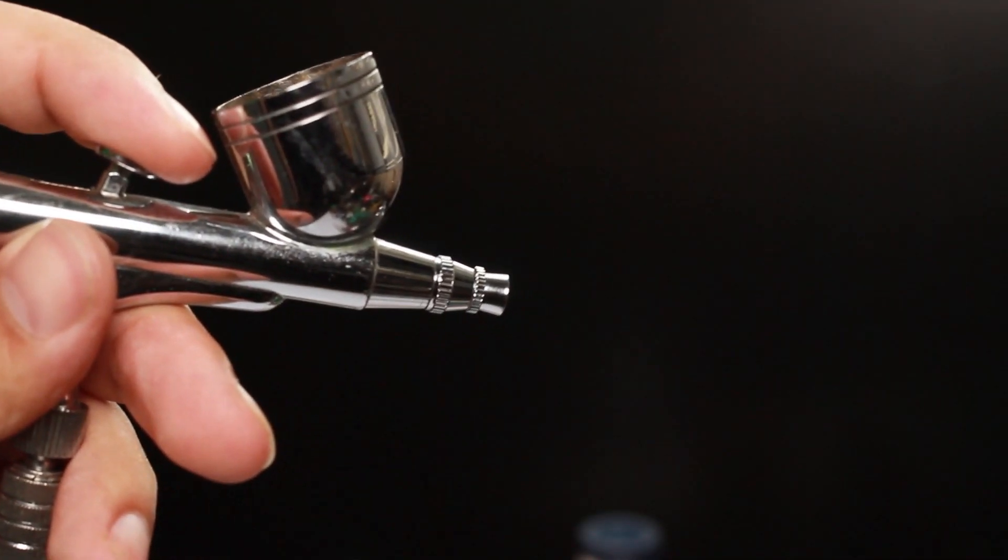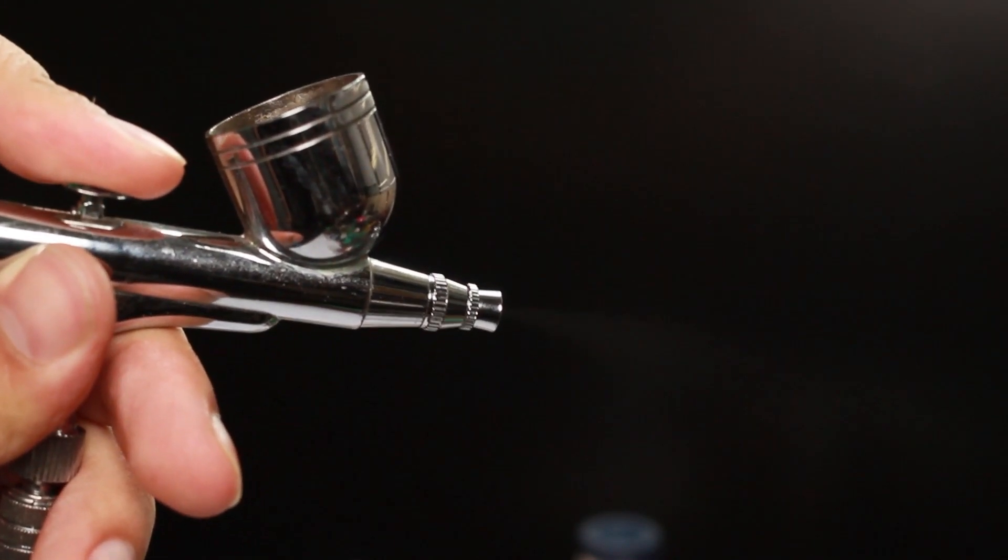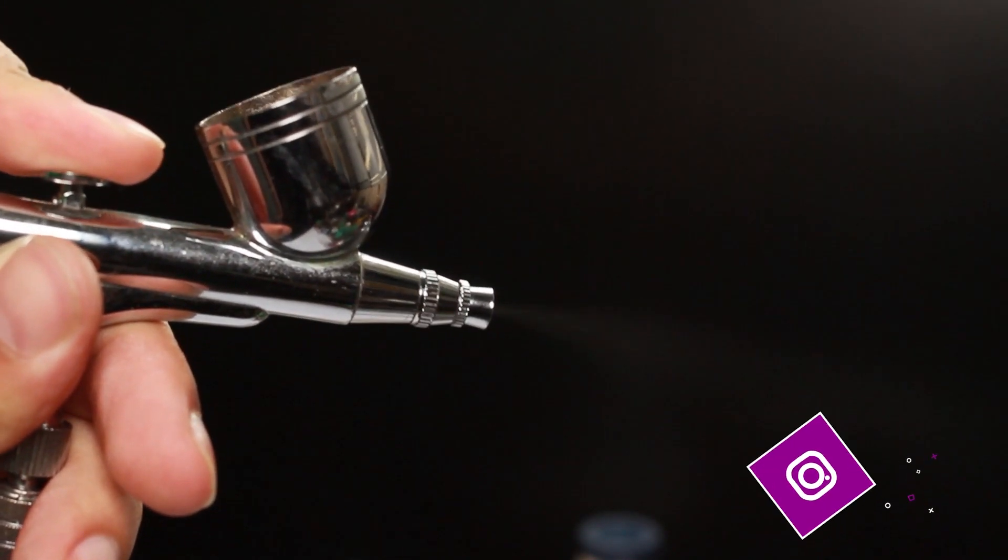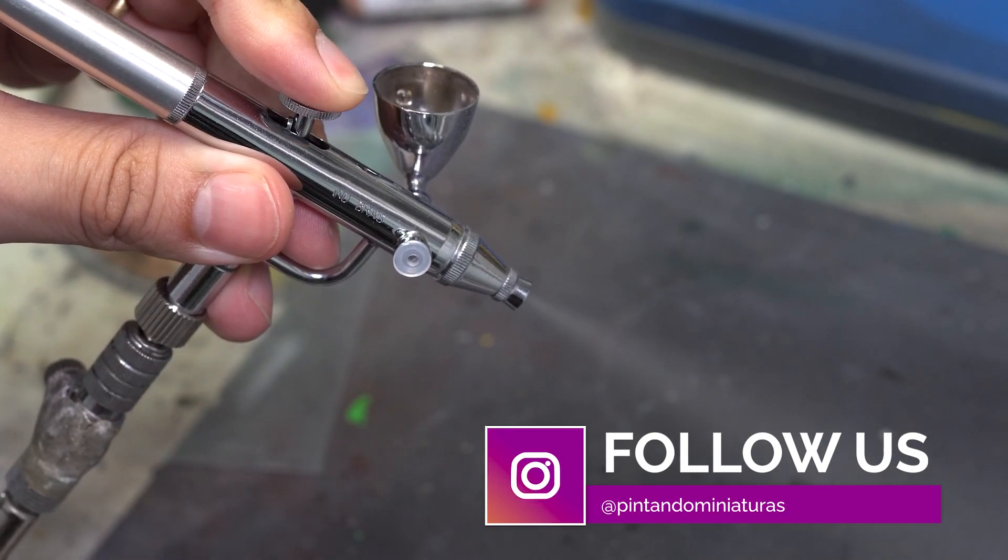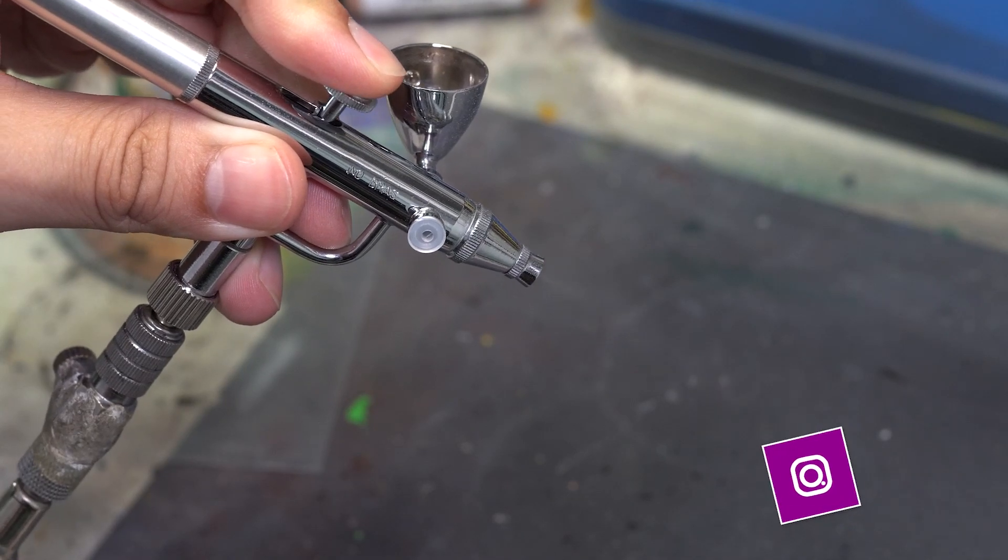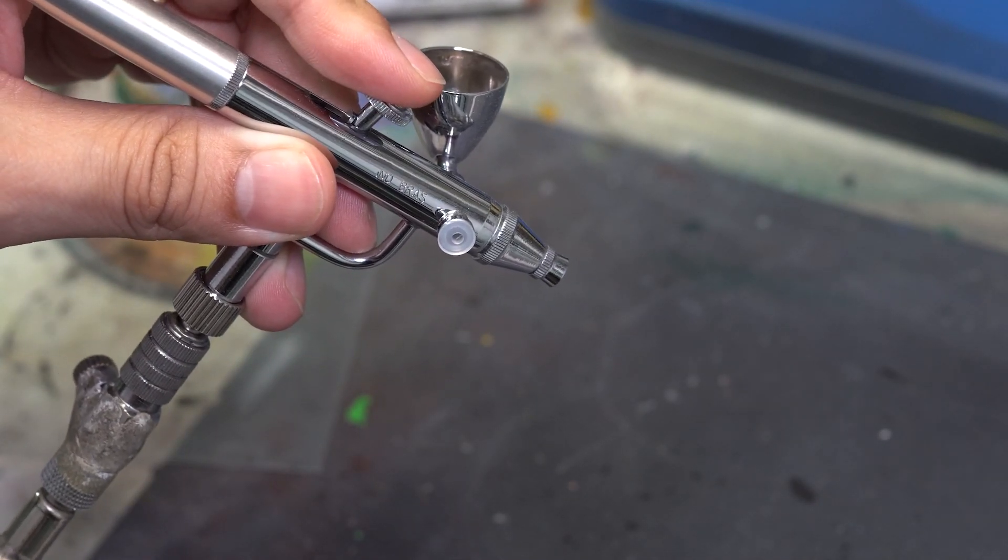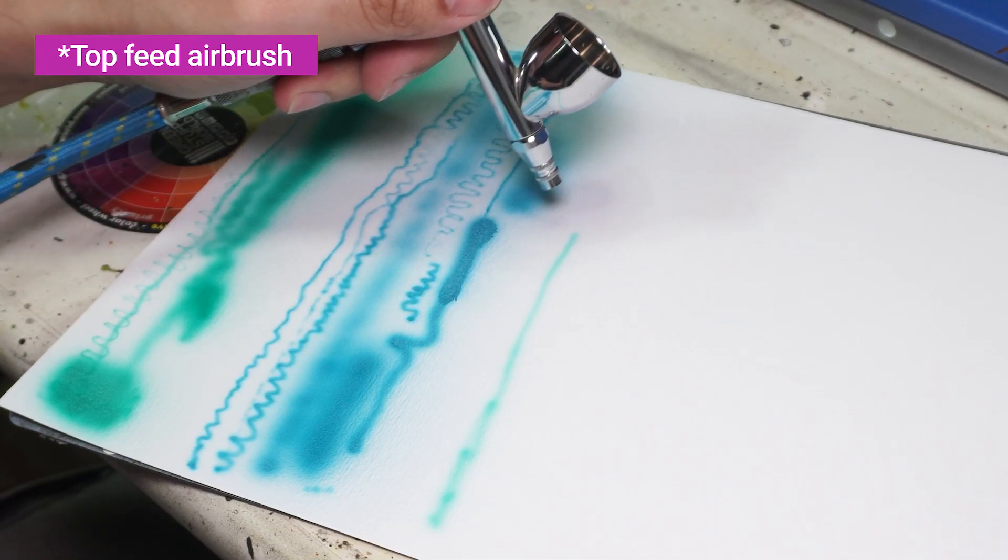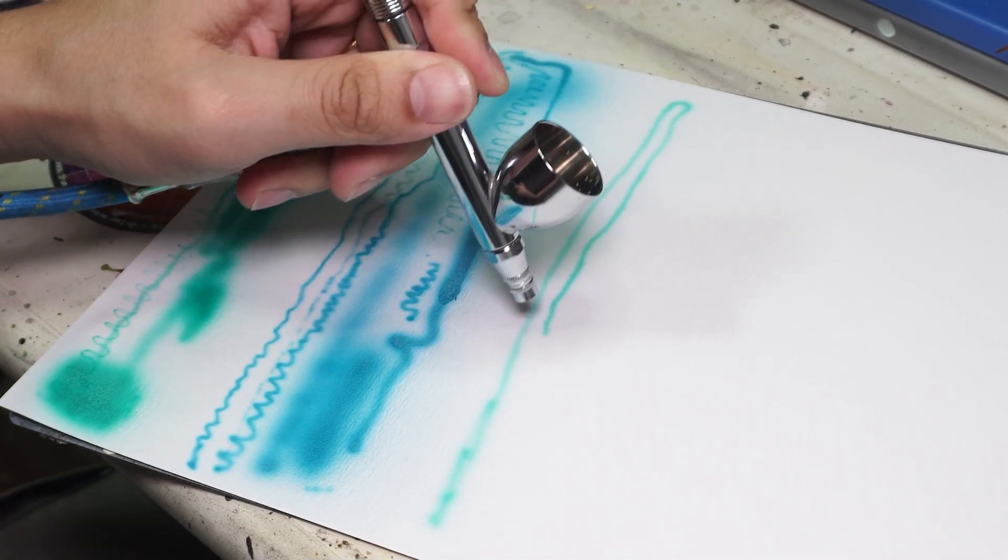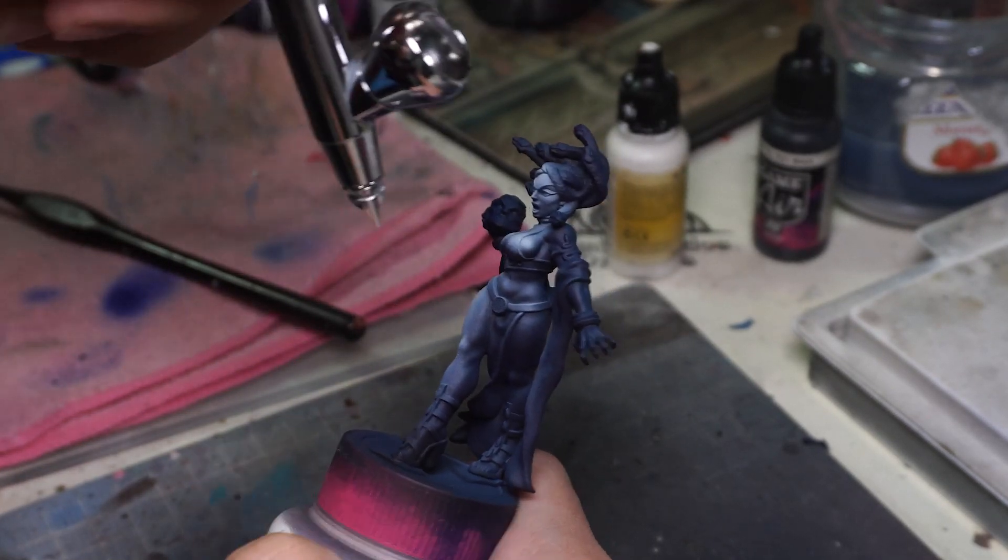There are several types of airbrush. For most cases including miniature painting I recommend a dual action airbrush. This basically means you push the trigger down to release the air and you pull the trigger back to release the paint from the cup. You can control the quantity of the paint depending on how far you pull the trigger. I personally find the top gravity airbrushes are the most versatile ones, especially if you are working with small to medium surfaces like miniatures, small canvas like A3 size or t-shirts.